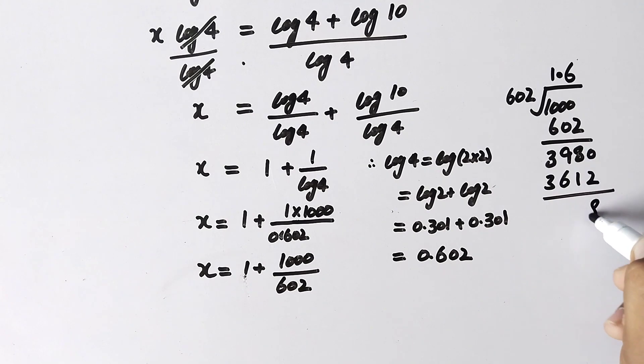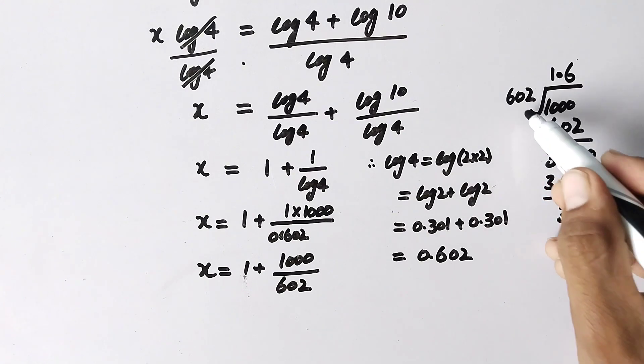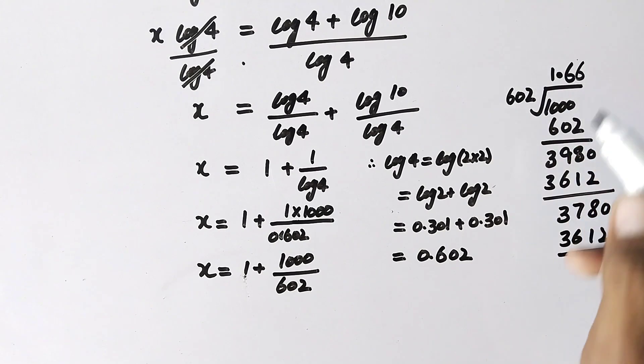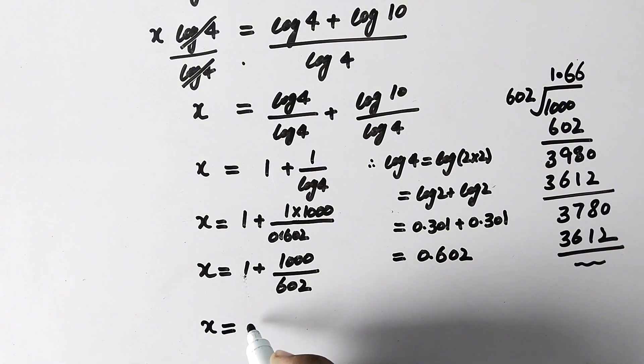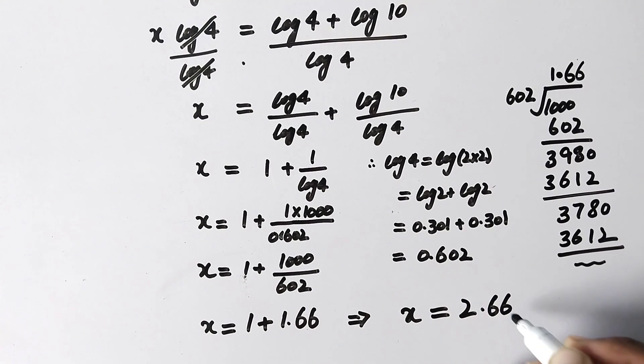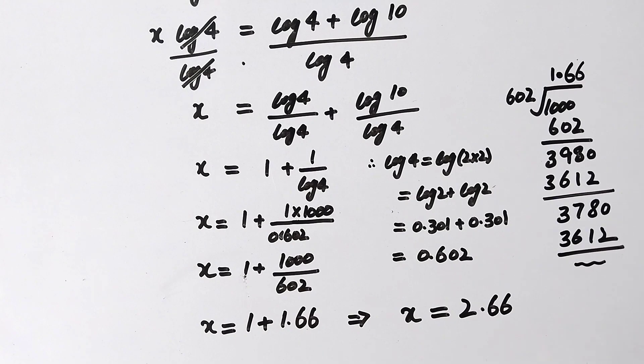And now it will be 3612, and 3780. Now again we will take 0, and now again 3612. And with whatever is left behind, we have found our answer here. We will write x is equal to 1 plus 1.66, or x is equal to 2.66, and that is our final answer.